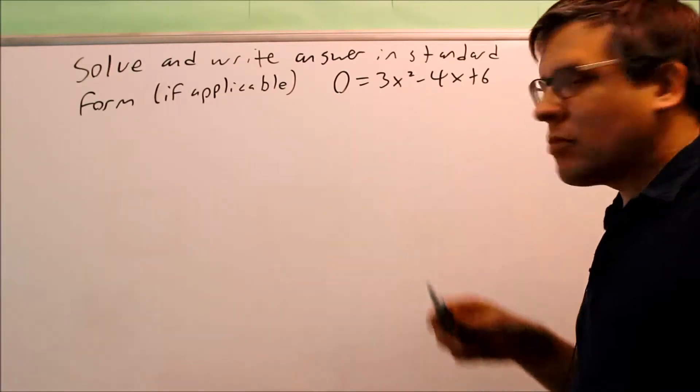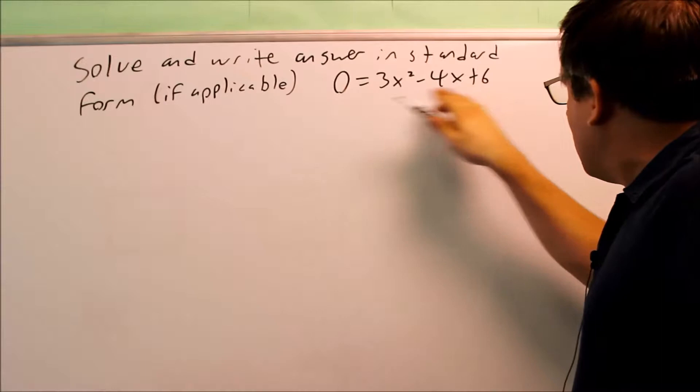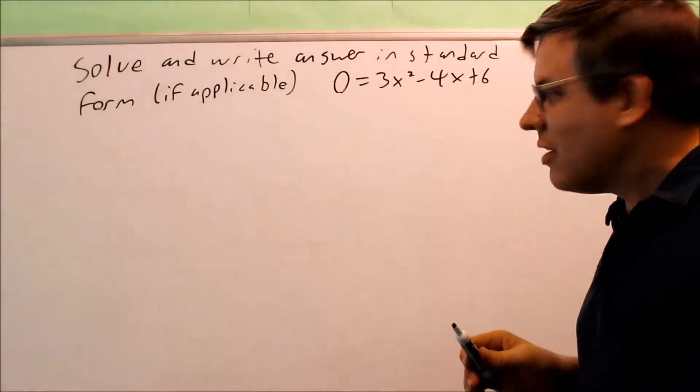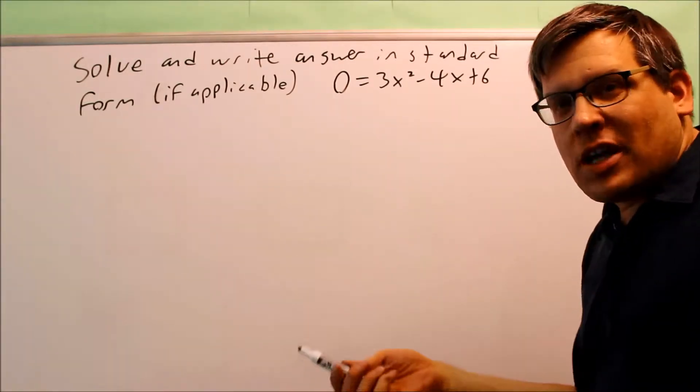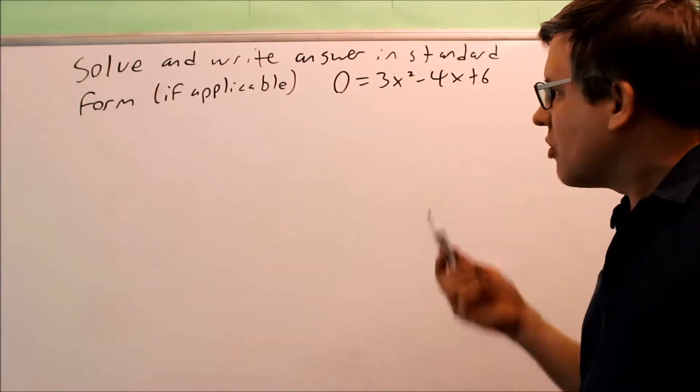The first strategy would be to do some factoring on that. But if you try and factor it, you'll find that you're not going to be able to do that because 3 times 6 is 18. You look for numbers that multiply to make 18 and add to be negative 4. You're not going to find anything that works there.